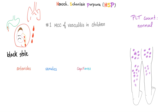Palpable petechiae on the buttocks and the lower legs — the entire leg can have purpura. The platelet count is going to be normal. They can ask you a trick question: what kind of infection happened in the upper respiratory tract? It was usually a virus or group A strep. That's why it might be a good idea to run the rapid strep throat test, which can include but cannot exclude the diagnosis.